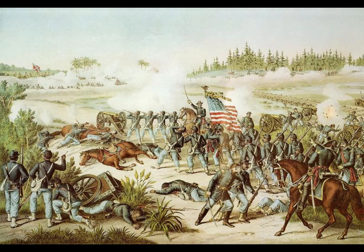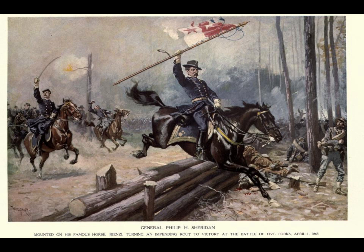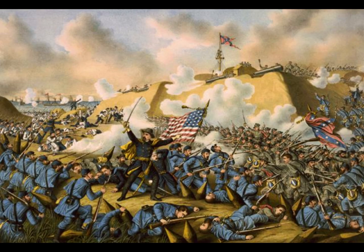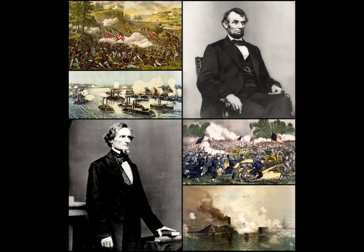In 1854, the Kansas-Nebraska Act allowed settlers in these territories to decide for themselves whether to allow slavery, overturning previous compromises. This led to violent conflict in Kansas between pro-slavery and anti-slavery settlers, in what became known as Bleeding Kansas. The violence highlighted how deeply divided the nation had become.